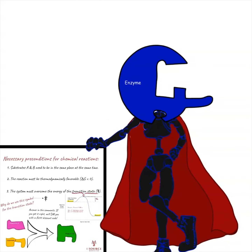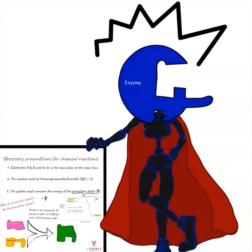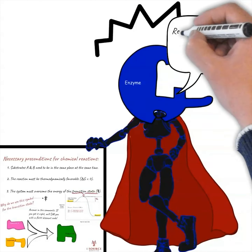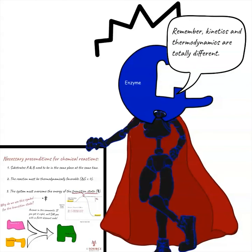You are an idiot. Now that I have your undivided attention, it's time for some real talk. Conflating thermodynamic and kinetic aspects of chemical and biological processes is one of the most devastating mistakes you can make on the MCAT.